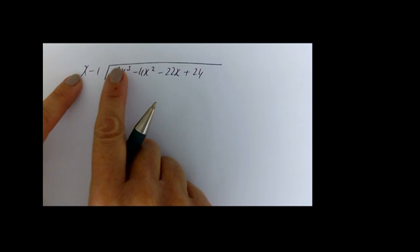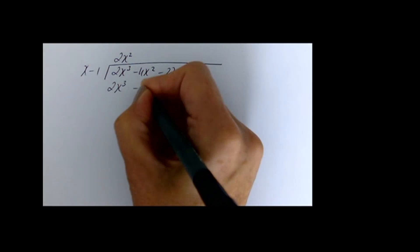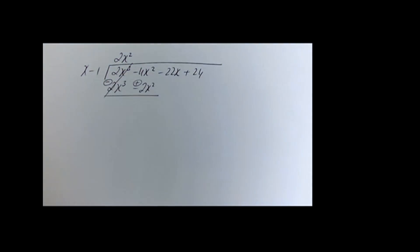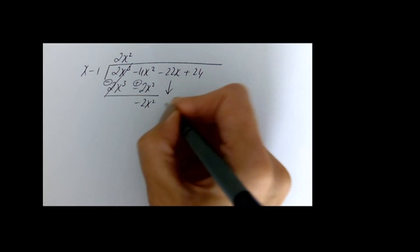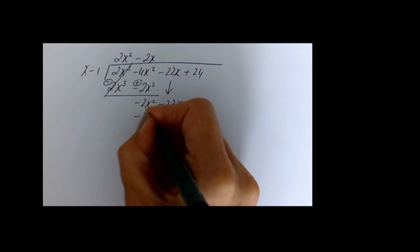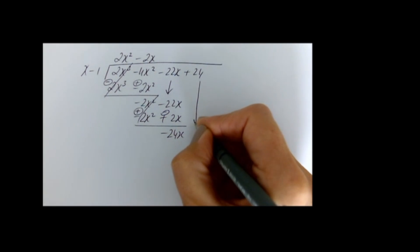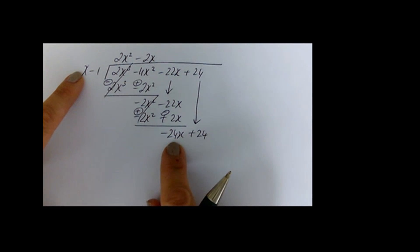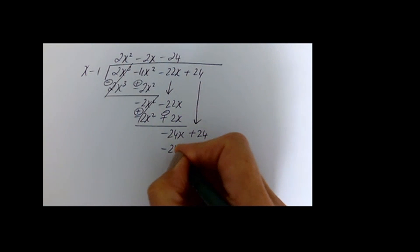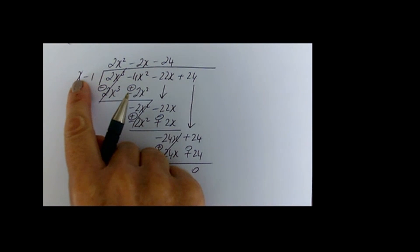Performing the division: 2x³ divided by x gives 2x². Multiply 2x² by x minus 1 to get 2x³ minus 2x², subtract and bring down to get minus 2x² minus 23x. Minus 2x² divided by x gives minus 2x. Multiply by x minus 1 to get minus 2x² plus 2x, subtract and bring down to get minus 24x plus 24. Minus 24x divided by x gives minus 24; multiply by x minus 1 to get minus 24x plus 24, subtract and get remainder zero. So x minus 1 divides in to give 2x² minus 2x minus 24.